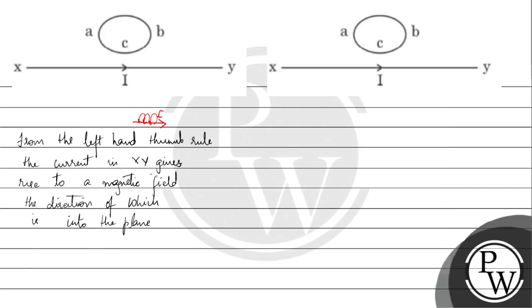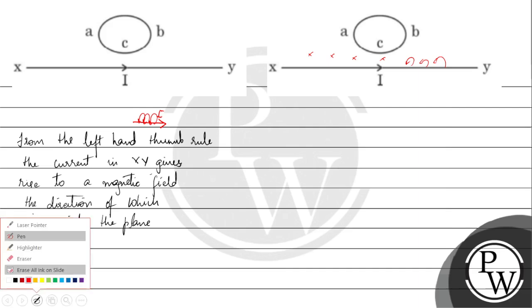So this magnetic field will induce a current in this circular loop. This is the direction of the magnetic field going into the plane.